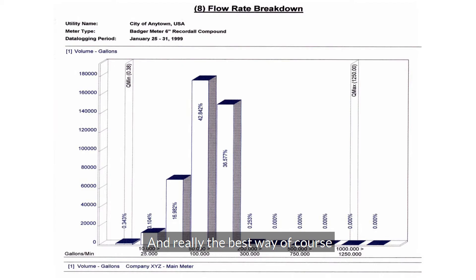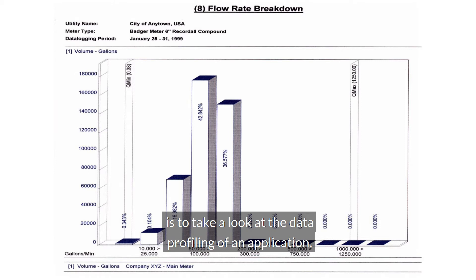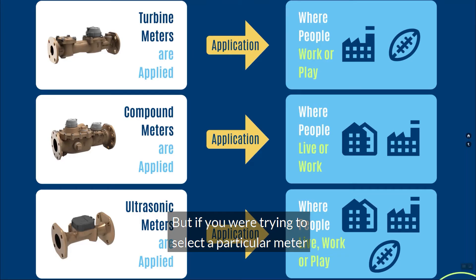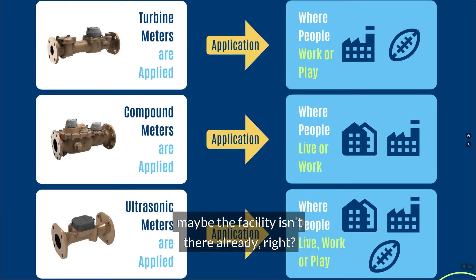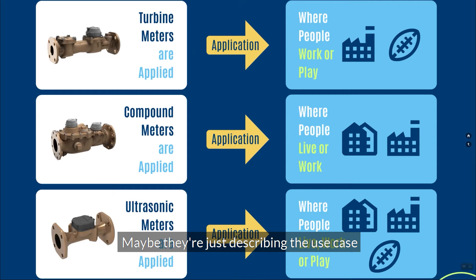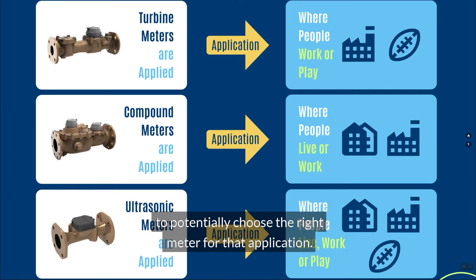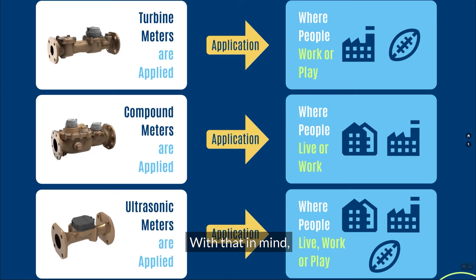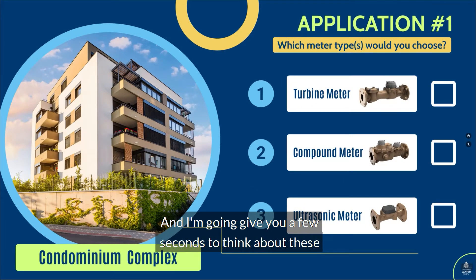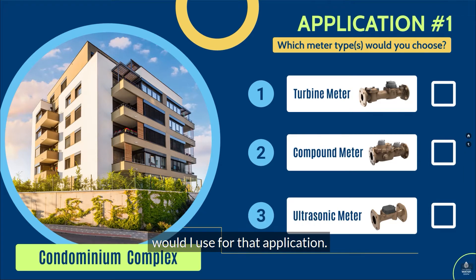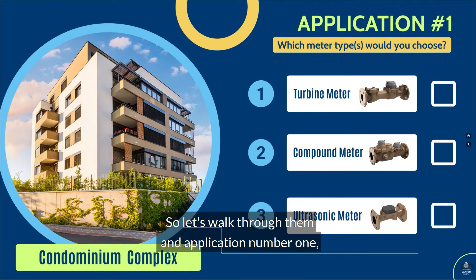Really the best way is to take a look at the data profiling of an application. But if you're trying to select a particular meter with just limited information — maybe the facility isn't there already and they're just describing the use case — these rules of thumb are going to allow you to potentially choose the right meter. With that in mind, let's take a look at these six particular applications. I'm going to give you a few seconds to think about each one and choose which type of meter you would use. It could be more than one, or it may not be any of these.